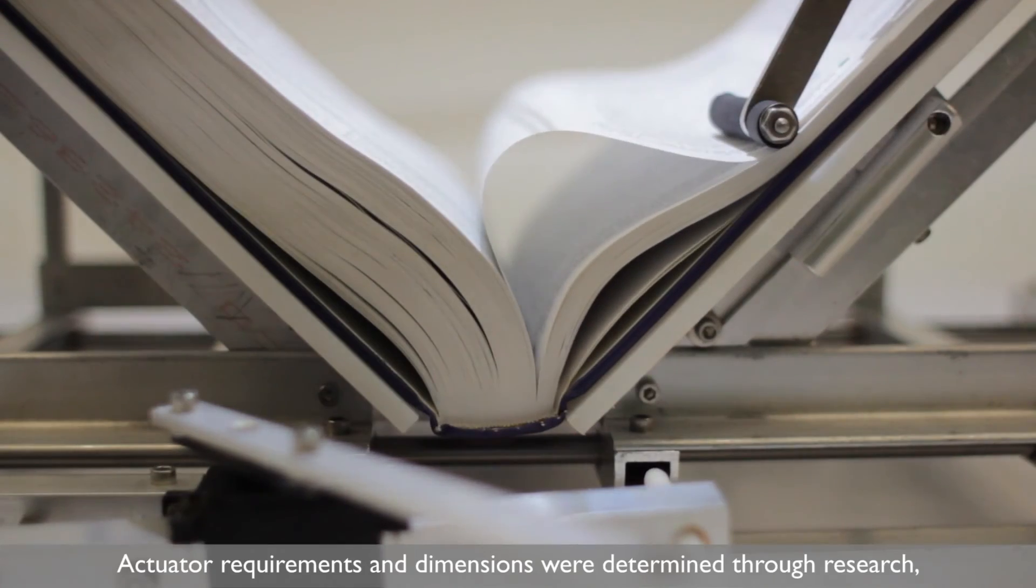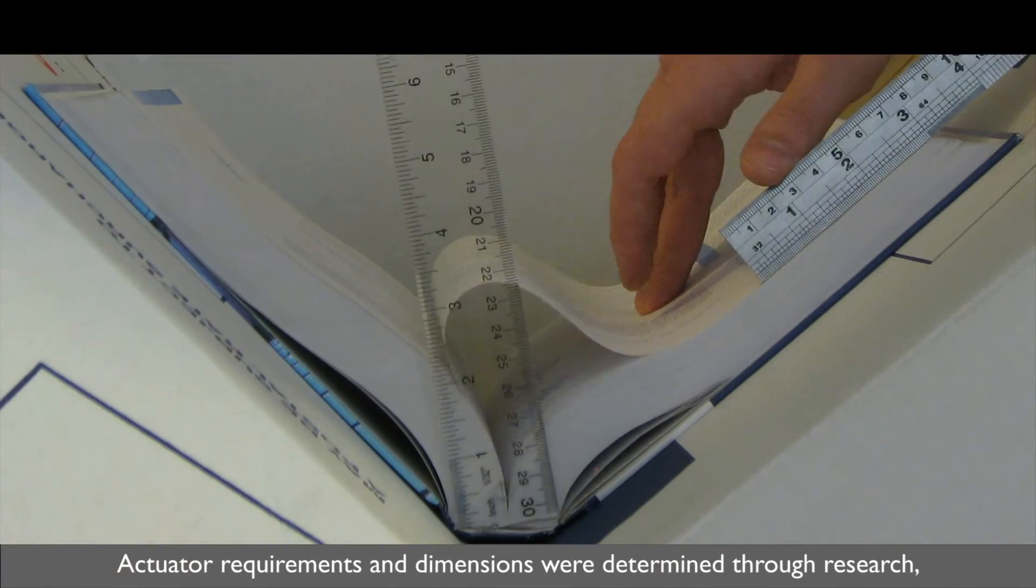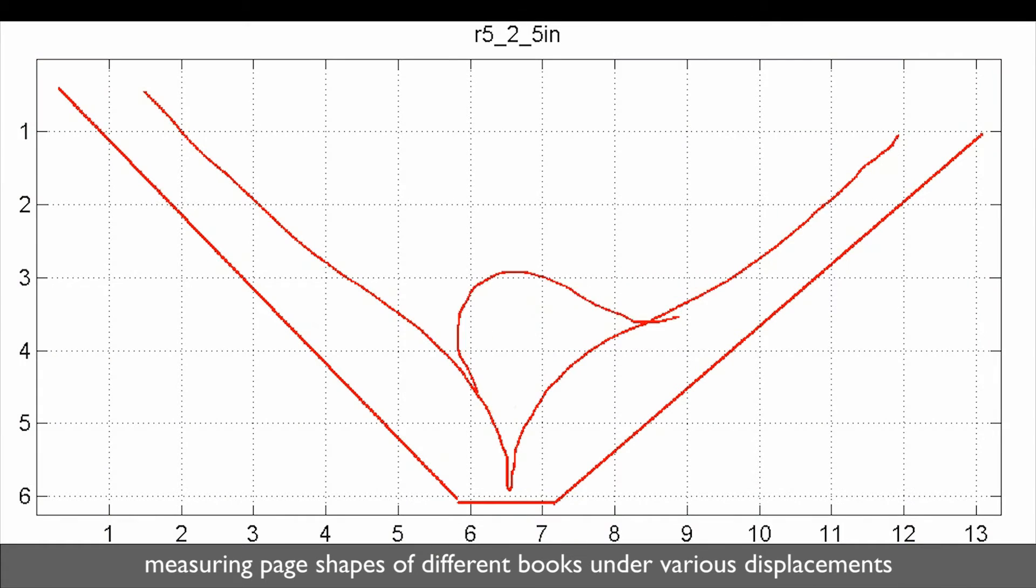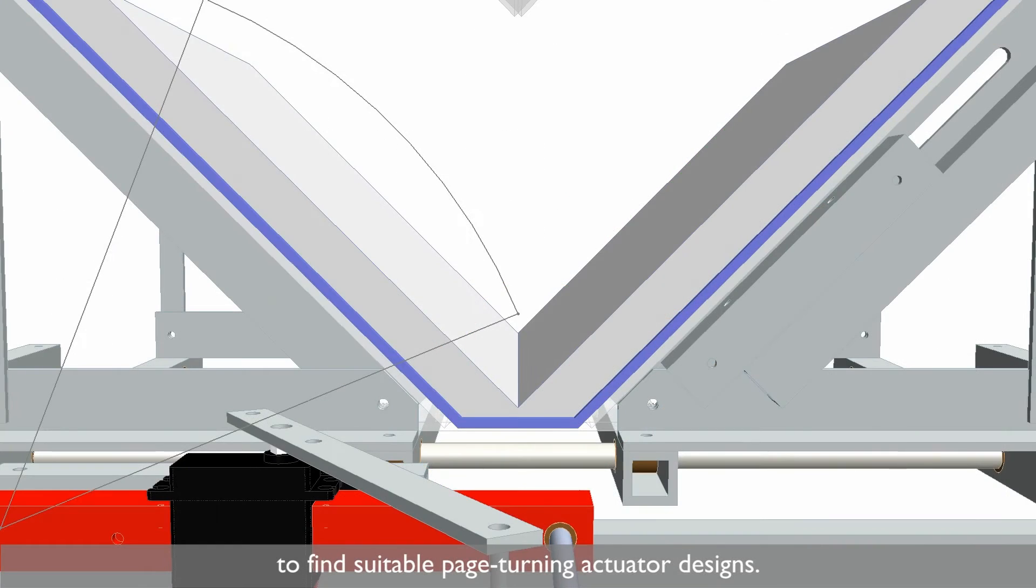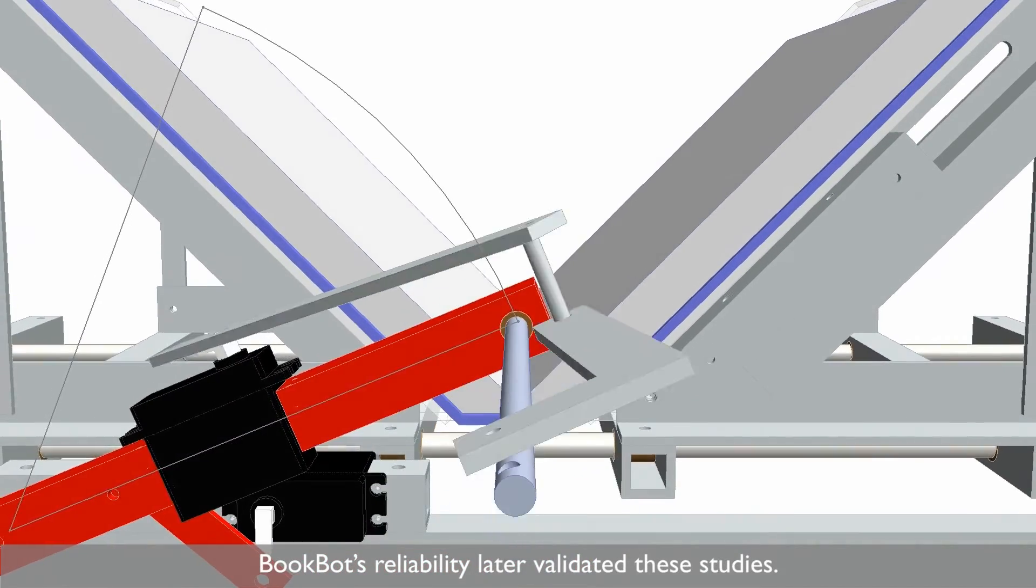Actuator requirements and dimensions were determined through research, measuring page shapes of different books under various displacements to find suitable page turning actuator designs. BookBot's reliability later validated these studies.